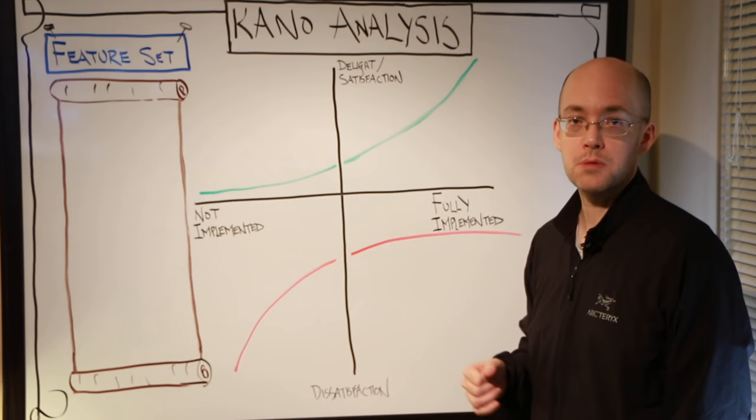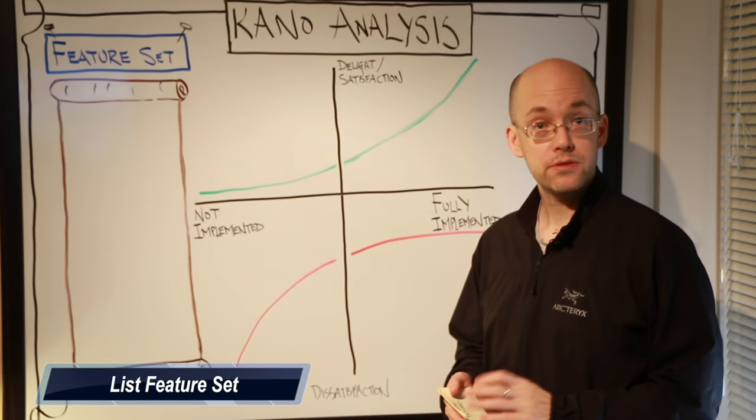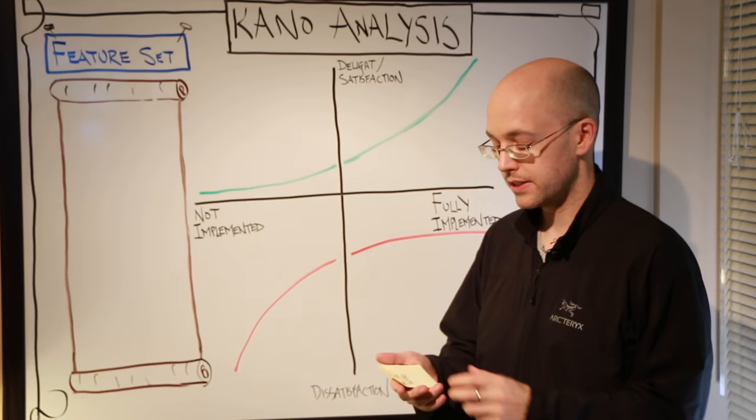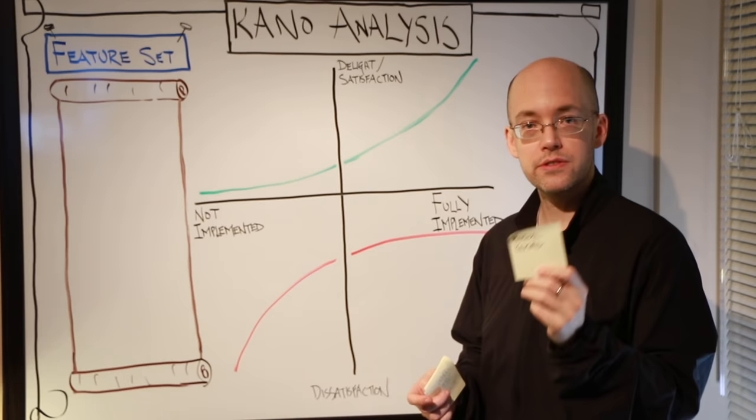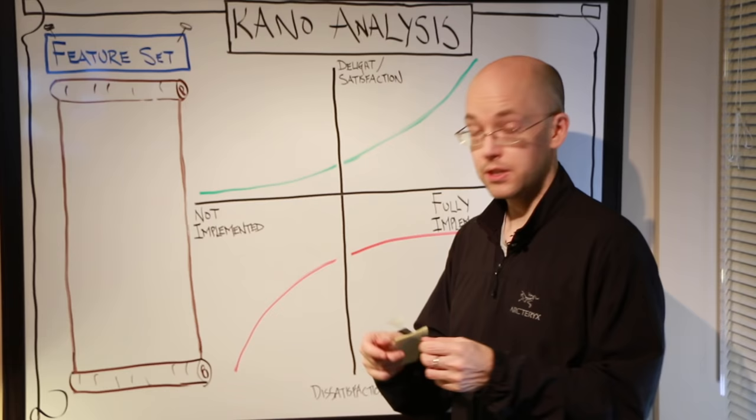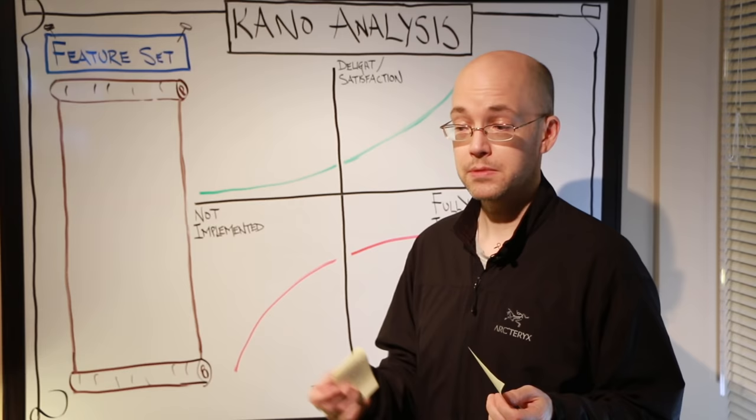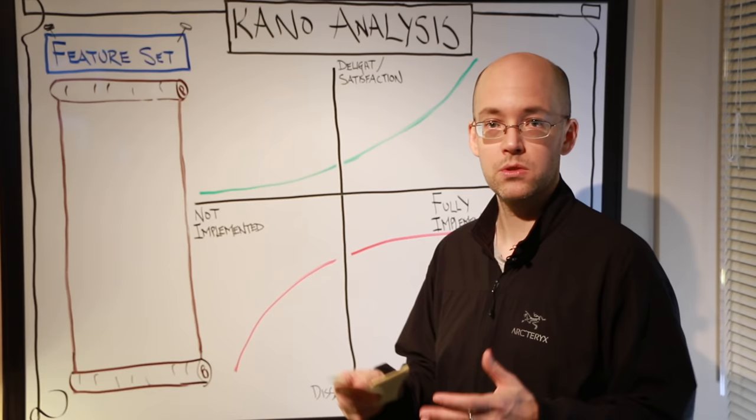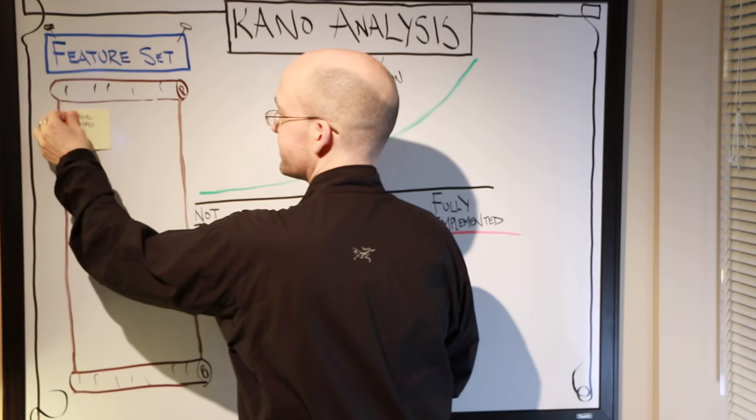So the first step in our Kano analysis is to go through a brainstorming technique or an ideation technique to create the ideas or the features that we will be implementing in our product. So what I've done is I went ahead and did some brainstorming myself by reverse engineering a device that I have. I just looked at a smartphone and broke it down into the features that it's offering, and I put up some other things as well.